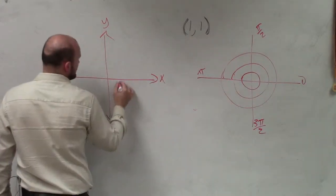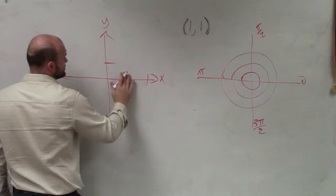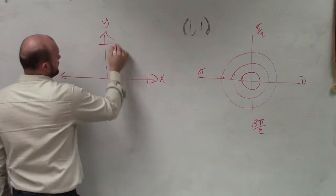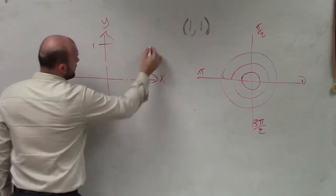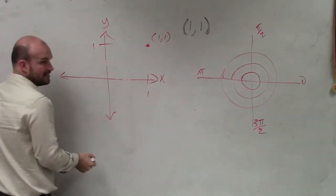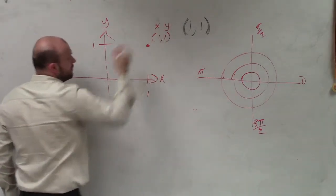So let's graph 1 comma 1. Actually, let's do it even bigger. 1, 1. So the point right here is 1 comma 1, right? That's the x. That's the y.